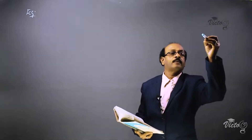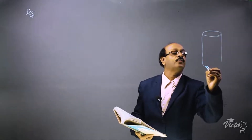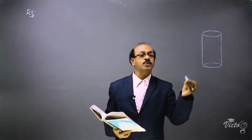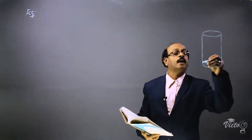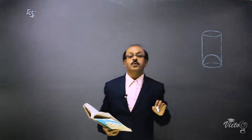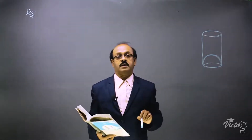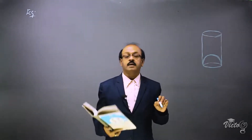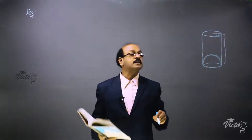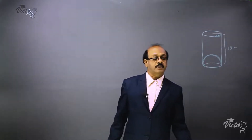Here is a glass in the shape of a cylinder. At the bottom there is a raised hemispherical portion which reduces the capacity of the glass. The original volume minus the raised portion will be the actual capacity. It is given that the diameter is 5 centimeters, so the radius is 2.5 centimeters, and the height of the glass is 10 centimeters. We have to calculate the apparent volume and the actual capacity.